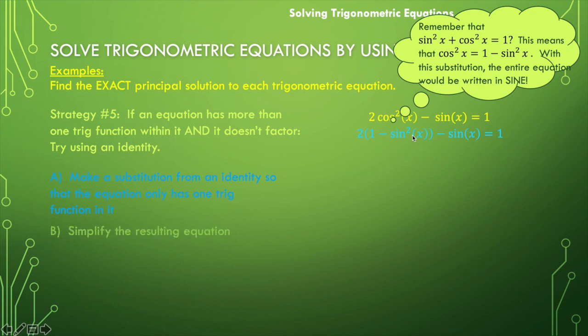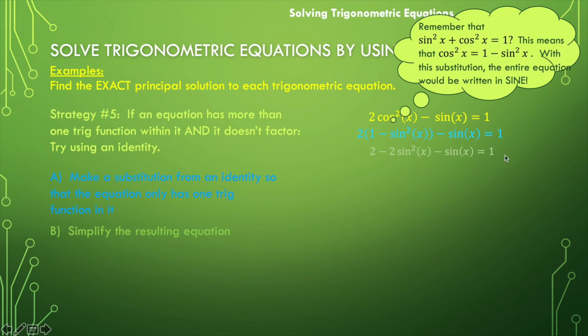Now let's simplify. Distribute the two through — so I'd have two minus two sine squared of x minus sine of x is equal to one. Let's rearrange so our highest power is in front and positive. Taking everything to the right hand side, I have two sine squared of x plus sine of x minus one is equal to zero. That's another quadratic function.